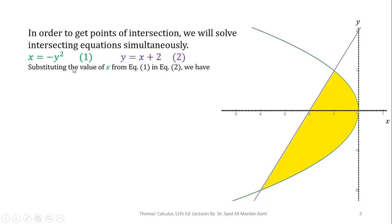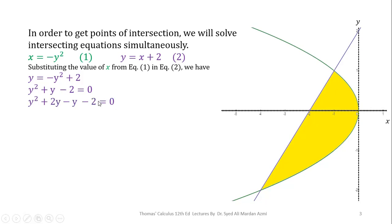Substituting the value of x from equation (1) into equation (2), we get y = -y² + 2. Shifting into standard form: y² + y - 2 = 0. To factorize, the coefficient of y² is 1; multiplying by the constant -2 gives -2. The factors of -2 that add to give the middle coefficient are +2 and -1, so we write y² + 2y - y - 2.